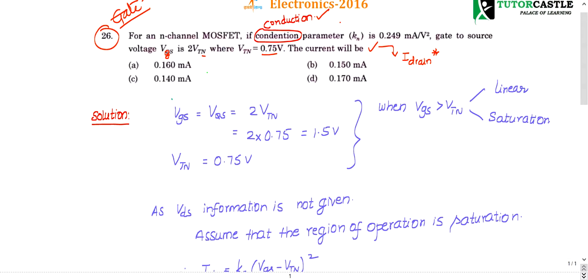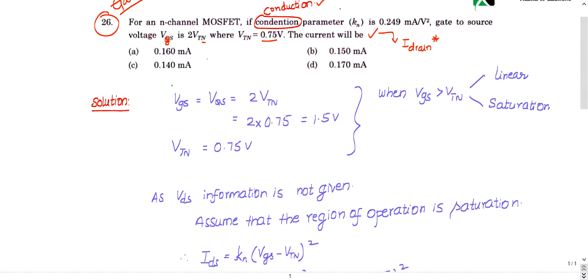Listen to this for just 5 more minutes and you will learn an important concept usable in every exam — it's like a one-for-all shortcut. Let us write the given data. VGS, the gate-to-source voltage, is given as 2VTN. VTN is 0.75, so substituting, VGS = 1.5 V. KN is given as 0.249 milli, which is 0.249 × 10⁻³ ampere per volt square.